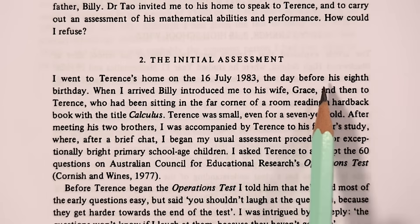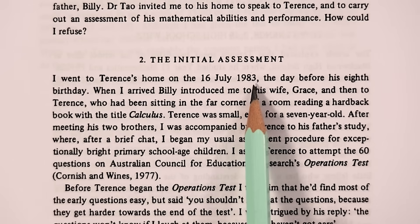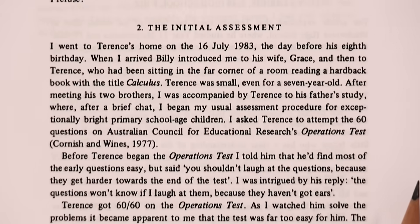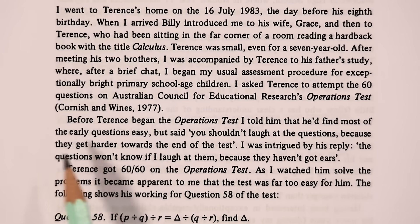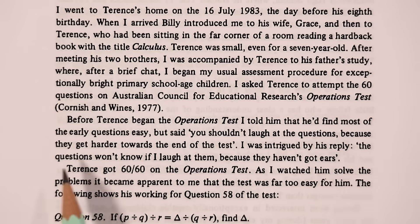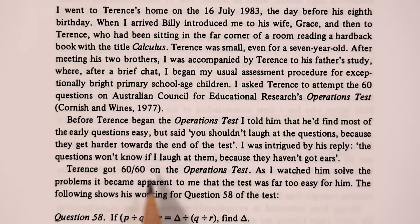It was the day before Terence's eighth birthday, the 16th of July 1983, exactly 38 years ago. And it says here that Terence was given an operations test. Knowing that he might find the first few questions too easy, Clements says you shouldn't laugh at the questions because they get harder towards the end of the test. And Terence has an interesting reply. He says the questions won't know if I laugh at them because they haven't got ears.